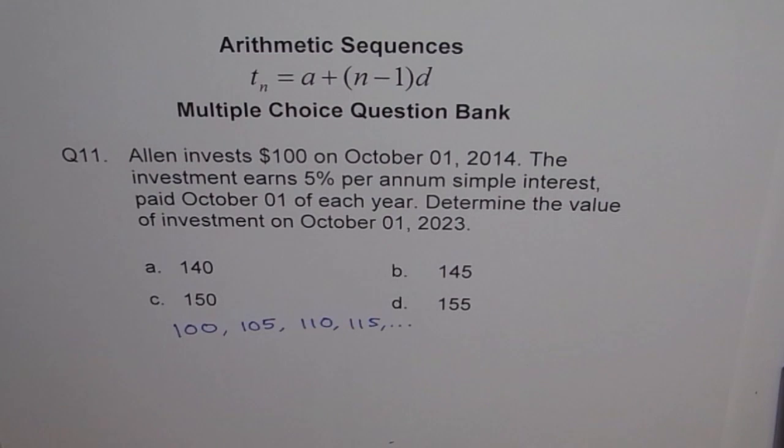This is arithmetic sequence. Since, if we see the difference between consecutive terms, we get $5. 105 minus 100 is 5. 110 minus 105 is also 5. So here, the general formula is first term plus n minus 1 into d.